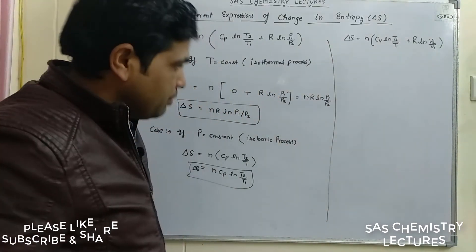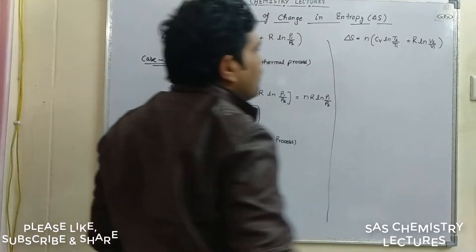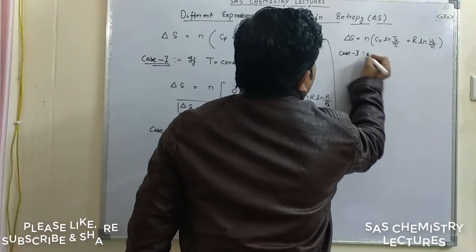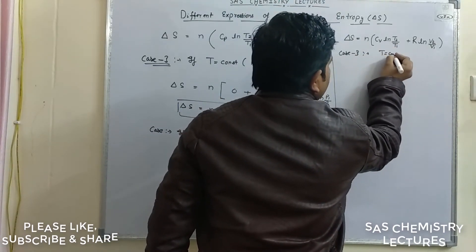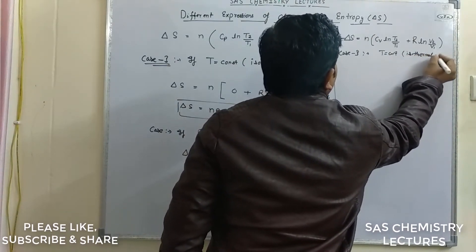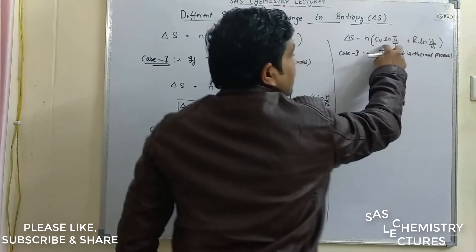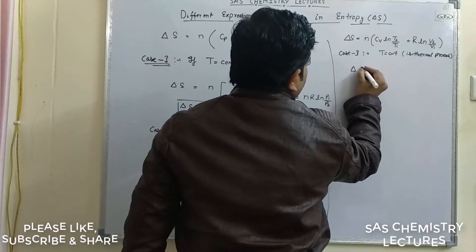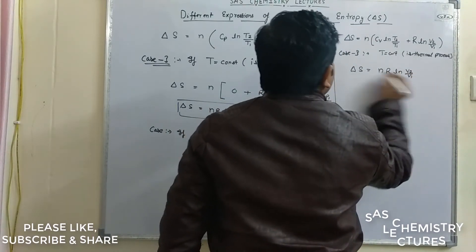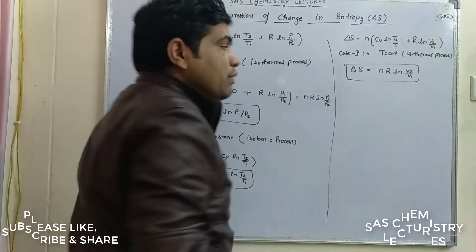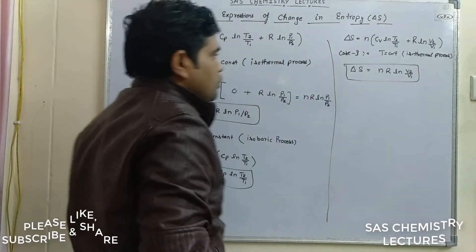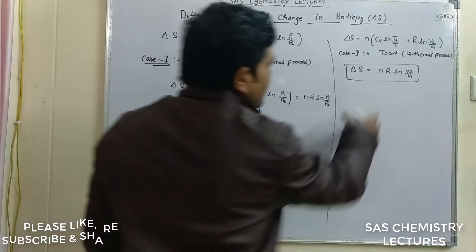Now applying case one to the second formula. If temperature is constant — isothermal process — the ln(T2/T1) term becomes zero, and the formula reduces to ΔS = N·R·ln(V2/V1). If two volumes are given, we use this formula to solve problems related to change in entropy.